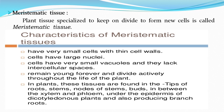All plant cells contain cell walls, but animal cells do not contain cell walls. In meristematic tissue, the cell wall is very thin and made up of cellulose, which is a carbohydrate substance. All cells of meristematic tissue contain large nuclei, and they have very small vacuoles — which may be present or absent.